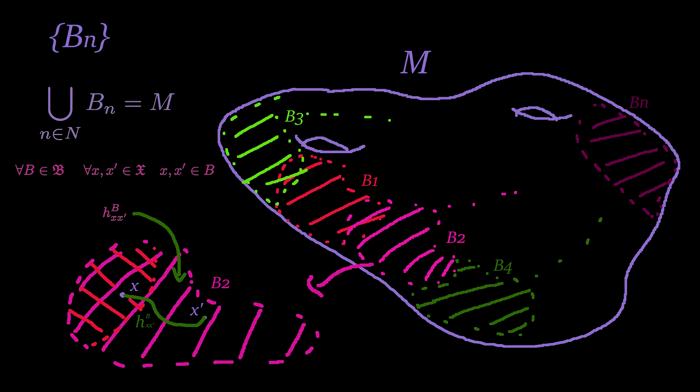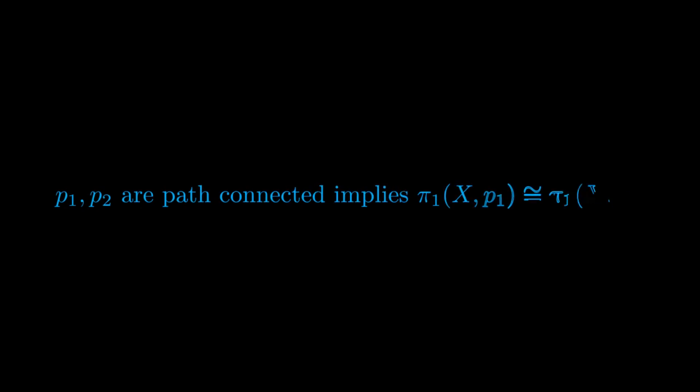At this point, we recall a well-known fact from algebraic topology. That is that fundamental groups based at two points that are path-connected will be isomorphic. This is because the path connecting them induces a group isomorphism between the two groups. For this reason, inside a path-connected component, we can choose any base point for our fundamental group.